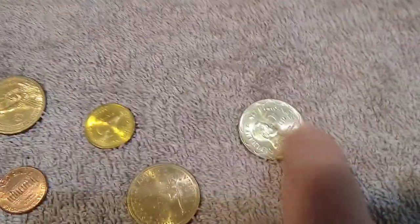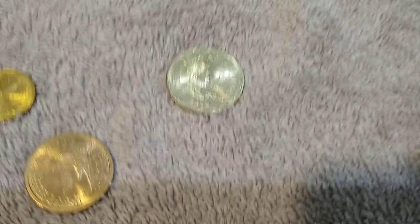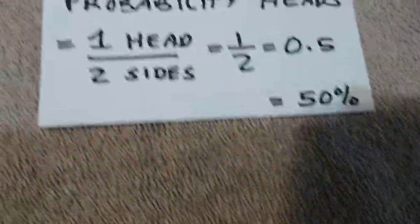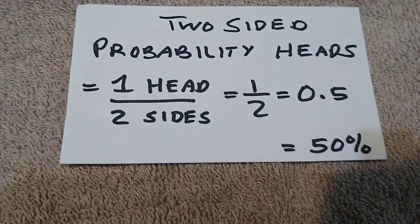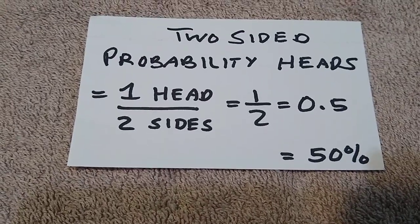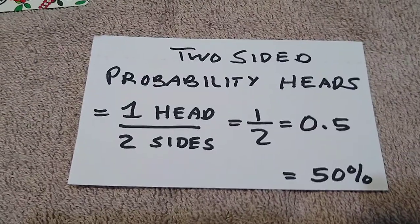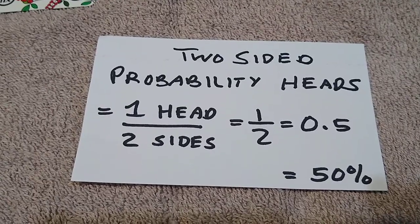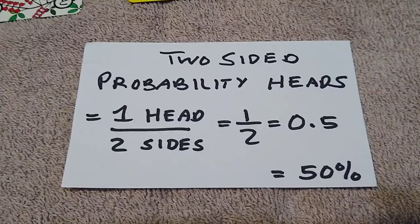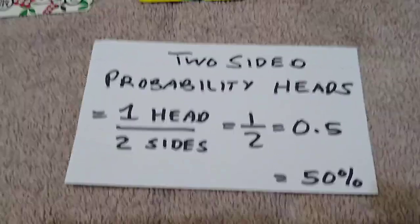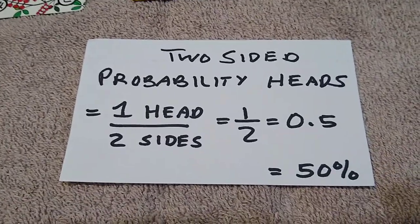The probability of getting a head on this coin is simply one head divided by two sides, so the chance that the coin will land head-up is one out of two possible ways it can land — one-half, or 0.5, fifty percent.